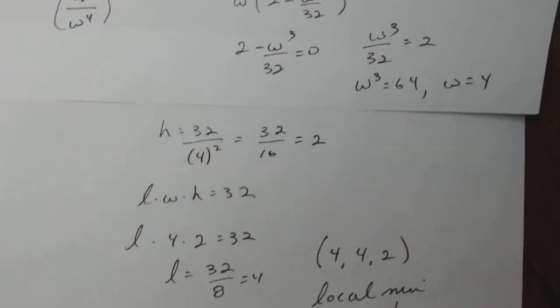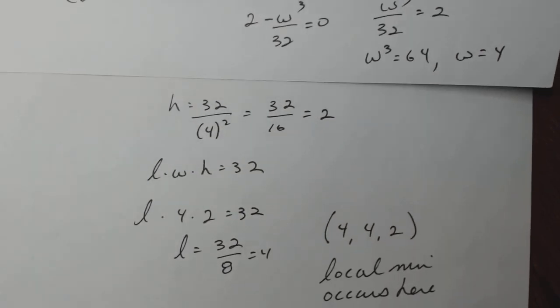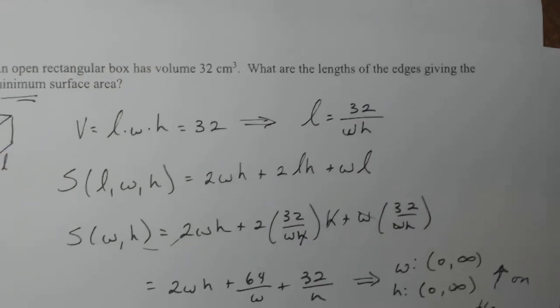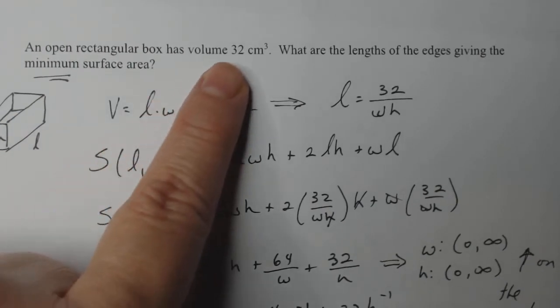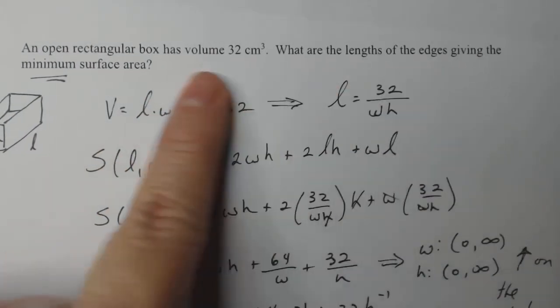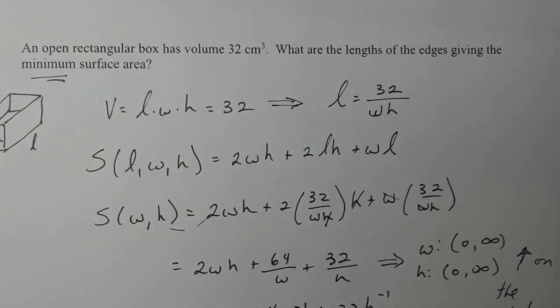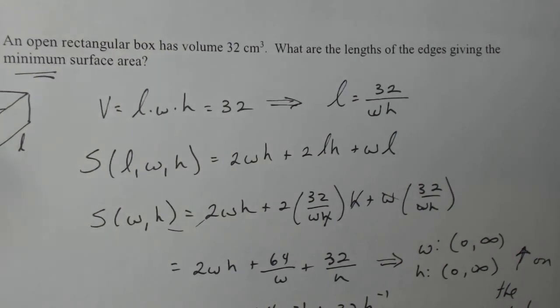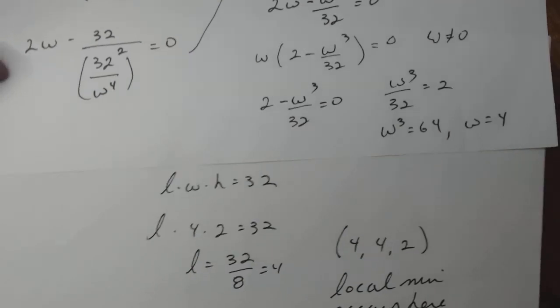Now let's look at the problem. Let's see what it actually is asking us. Does it actually ask us for the surface area or just the dimensions? It says an open rectangular box is 32 centimeters. What are the lengths of the edges giving minimum surface area? It doesn't ask us what that surface area is. So I just have to answer the question.